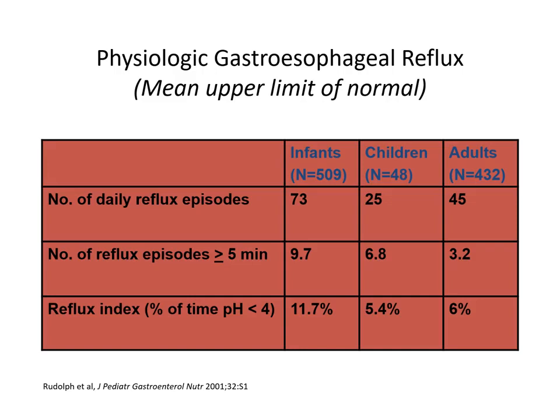To judge whether pH monitoring is suggestive of reflux, there are a couple of factors to calculate: the number of daily reflux episodes, prolonged reflux episodes with pH below 4 for more than five minutes, and the reflux index — the percentage of time pH was below 4 during the 24 hours. This last factor is the main one used in reading pH monitoring. In adults, more than 4 to 6 percent of time at pH below 4 is considered pathological.